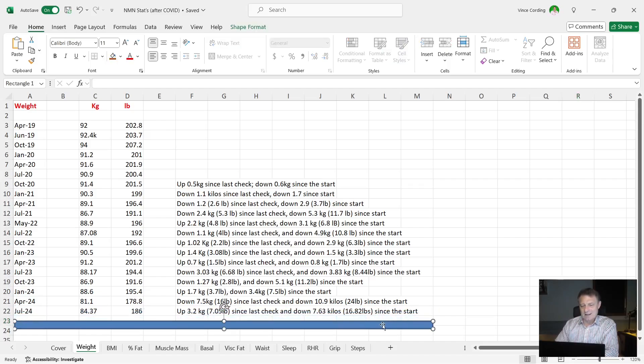I'm now 84.37, 186 pounds. That's up 3.2 kilograms, about seven pounds since the last check, but I'm down 7.3 kilos, 16.82 pounds since the start. Now I'm not too bothered about losing or gaining weight as long as it doesn't have a negative effect on either my percentage body fat or my muscle mass.